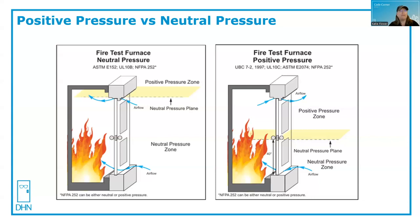This happened in about the year 2000 when the legacy codes were changing to the International Building Code. UL 10C, the positive pressure fire door test, came into the United States right around the 1997 to 2000 range and started to be adopted as part of the codes.